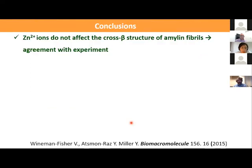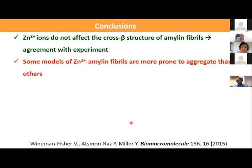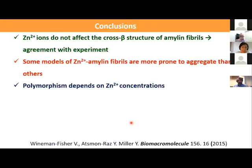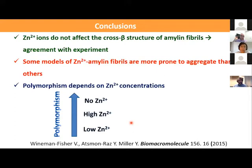Several conclusions were obtained from this work. First, zinc ions do not affect the cross-beta structure of amylin fibrils, consistent with Ram's experiments. We also found that some models of zinc-amylin fibrils are more prone to aggregate than others. Most interestingly, the polymorphism depends on zinc concentration: in the absence of zinc, there is a relatively high polymorphic state; at low zinc concentrations, the polymorphic state is very low; and at higher zinc concentrations, it increases again.